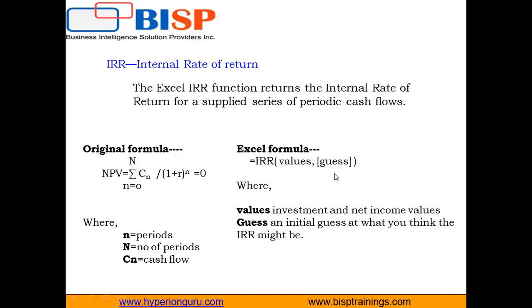The first argument, values, is a reference to a range of cells containing the series of cash flows — investment and net income values. It must contain at least one positive and at least one negative value. The negative value represents the investment made, because it is money going out of our account, and the positive value represents money coming into our account.